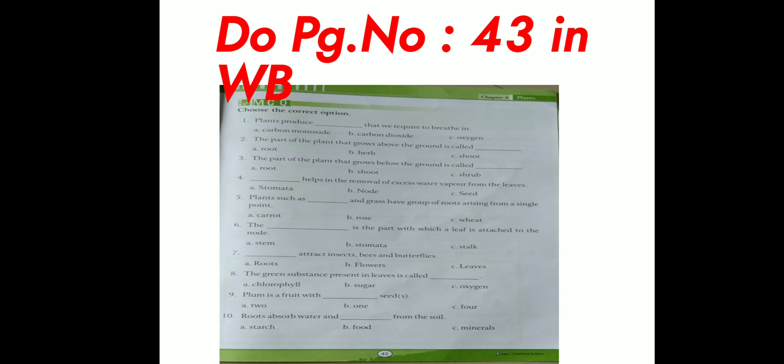Third one. The part of the plant that grows below the ground is called dash. A is root. B is shoot. C is herb. Next, dash helps in the removal of excess water vapor from the leaves. Option A is tomato. B is node. C is seed.